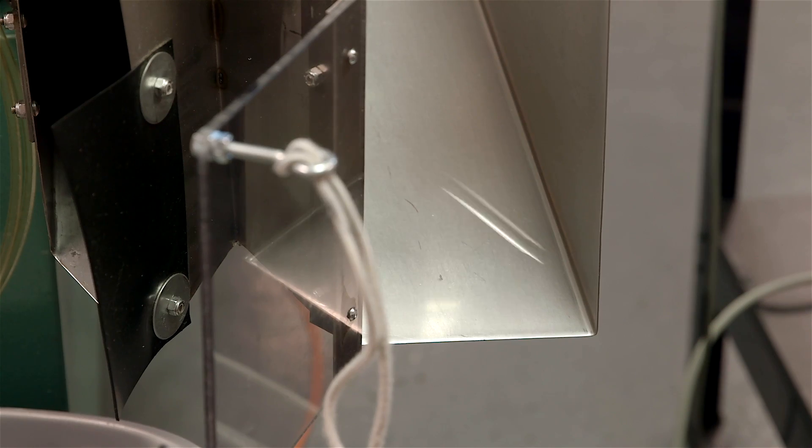Once the beta laser mic sees that we're producing good product again, it'll cut another three feet of the product out and then start keeping the product again.